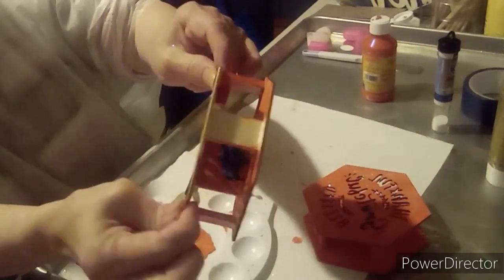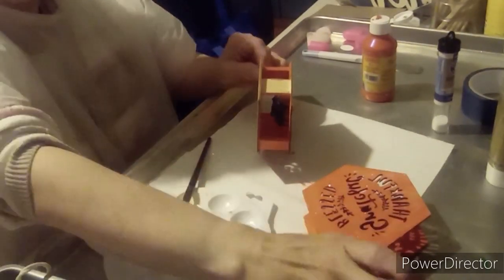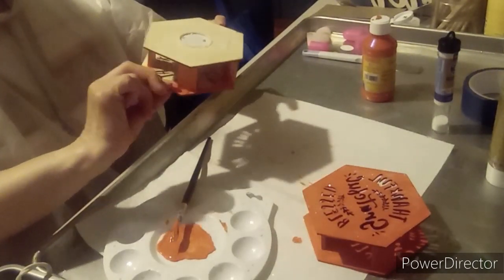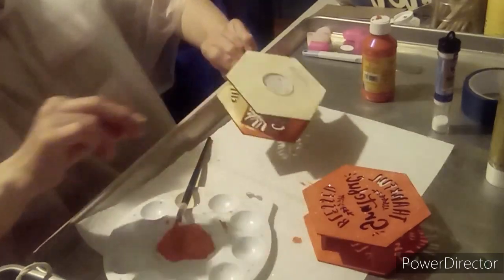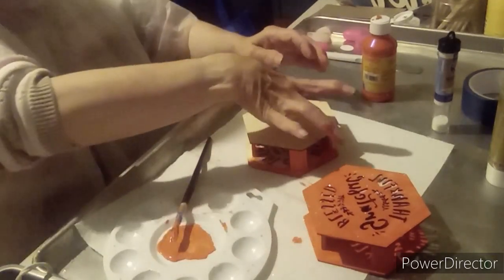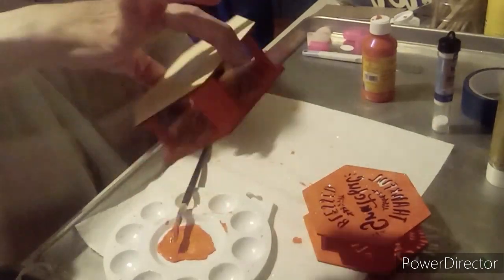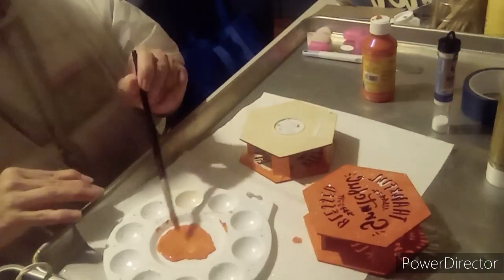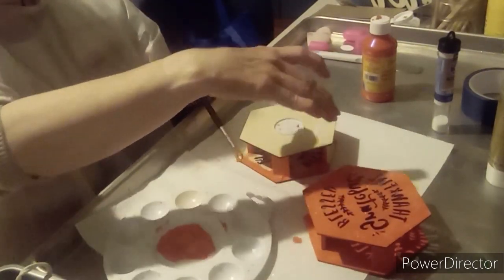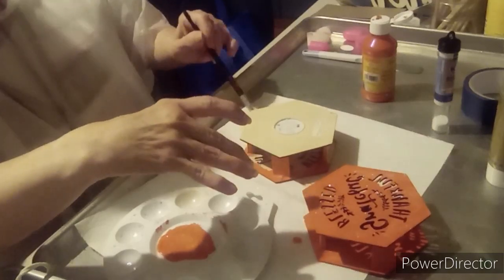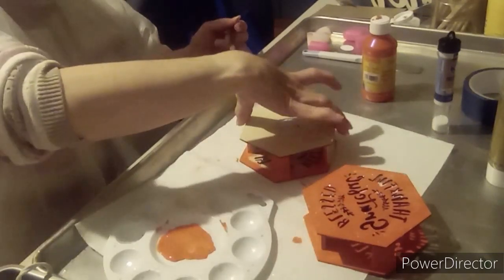And I'm not so worried about the side with the letters because we're going to glue the paper in here. But I am going to do the little edge because the edge will be showing. And I picked out orange. And I'm just painting. And I'm painting the edge also.